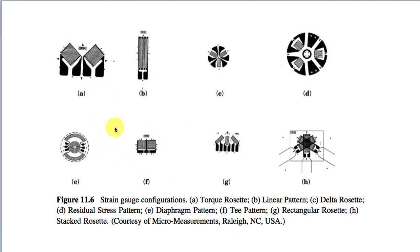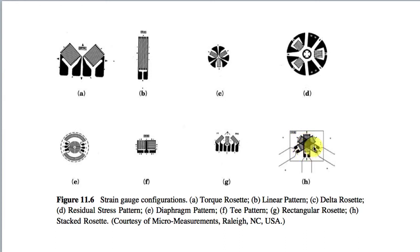You can get strain gauge configurations in a variety of layouts, with multiple gauges all mapped onto the same device, so you can mount a single device and have multiple gauges aligned with each other. For example, one configuration measures biaxial stress in perpendicular directions. There are also long narrow ones to fit onto your workpiece, and configurations with three different orientations at different angles to assess the full stress state in the material. In this course, we'll concentrate on gauges sensitive in only one direction.